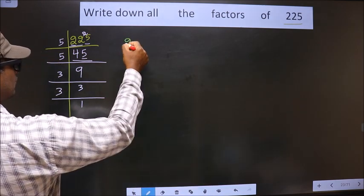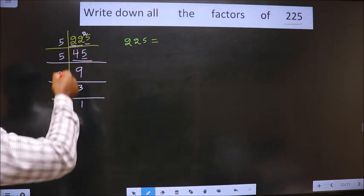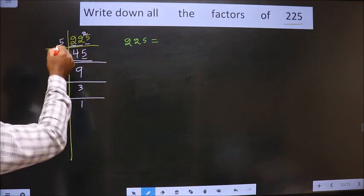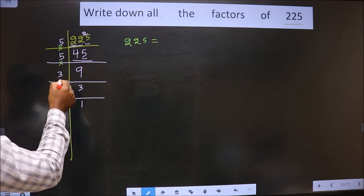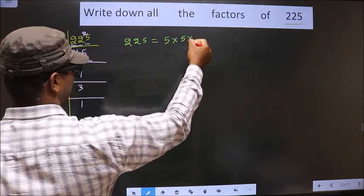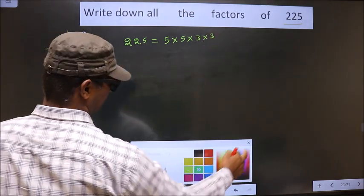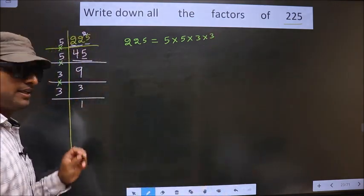So, now, 225 equals the product of these numbers. That is, 5×5×3×3×3. Clear so far?